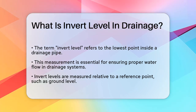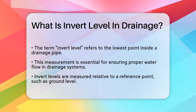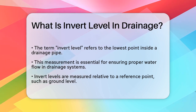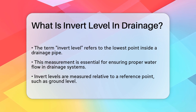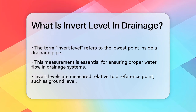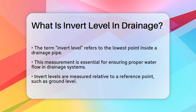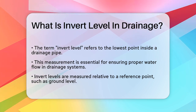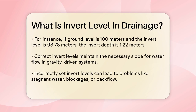To understand this better, let's consider how it's measured. The invert level is typically determined relative to a reference point, such as the ground level or a site-specific datum. For example, if the ground level at a particular spot is 100 meters and the invert level of the pipe is 98.78 meters, the invert depth would be 1.22 meters. This calculation helps engineers and contractors lay out the drainage system accurately.